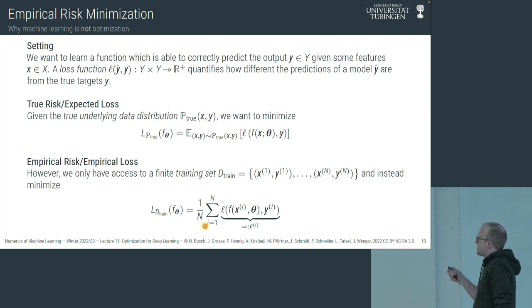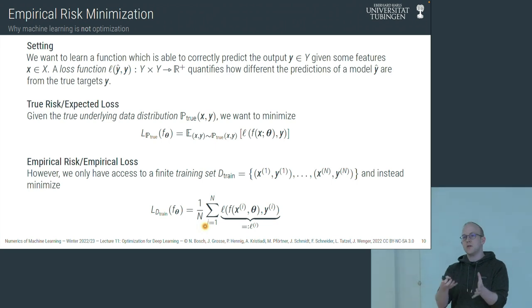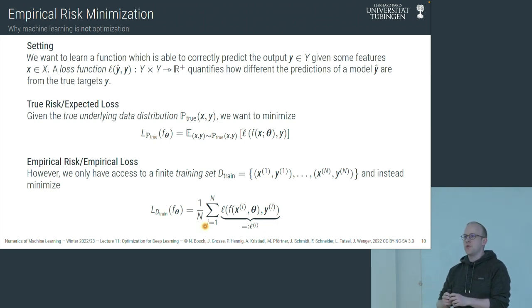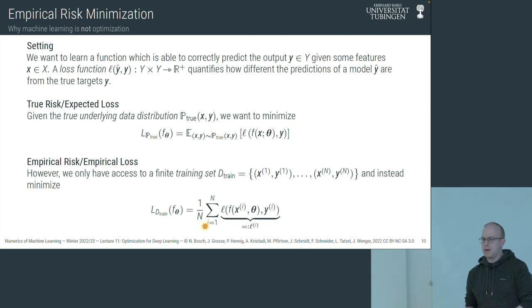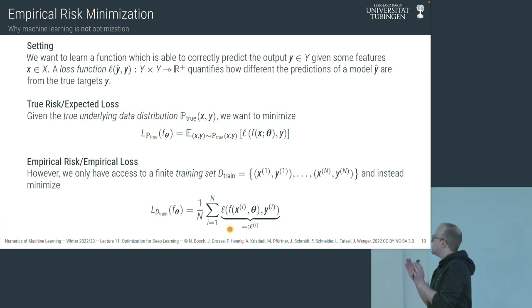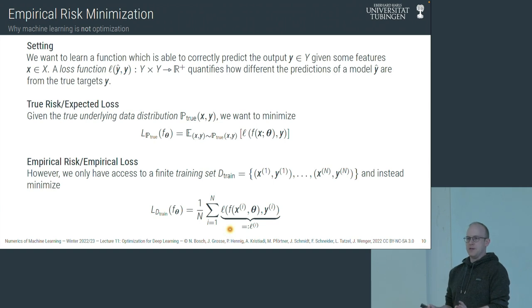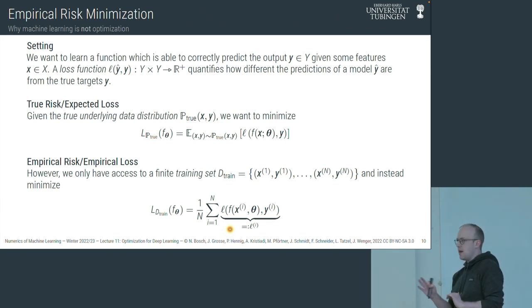What our optimization method operates on is just this empirical loss — not the true risk, not the expected loss, but the empirical risk evaluated on the finite dataset we have. And even this isn't fully true, because in deep learning we use batching. The gradient signal that steers our training process isn't evaluated on the full training set but only on a small sample — perhaps 200 images at a time. So what we minimize is not the quantity we actually care about. In that sense, machine learning is not optimization.